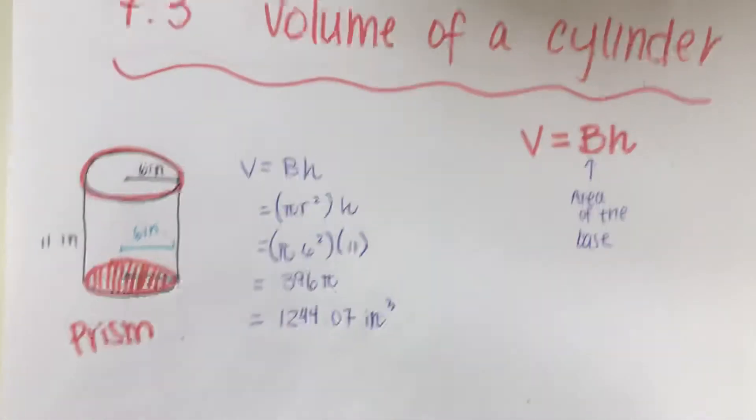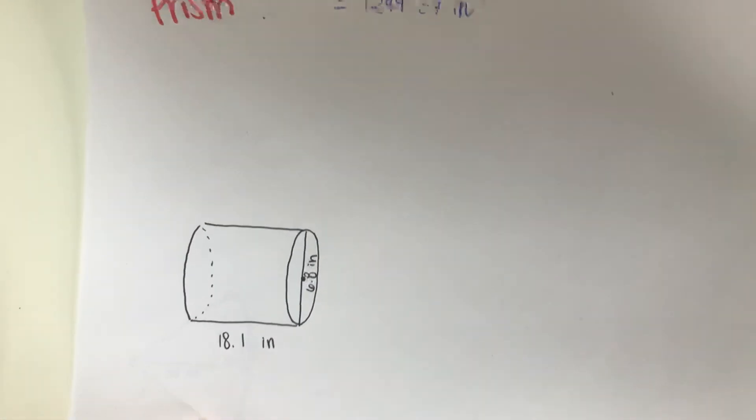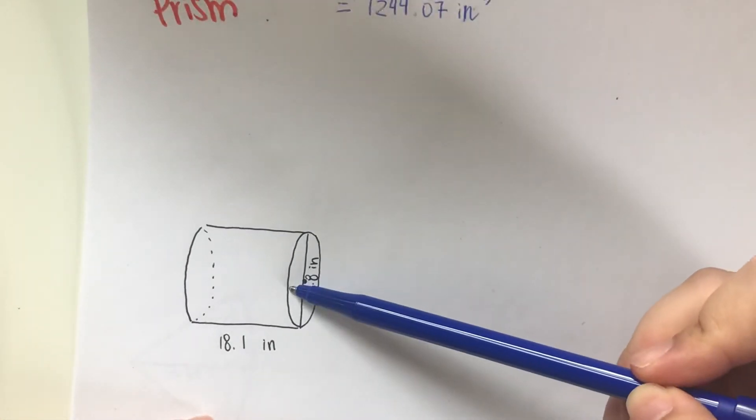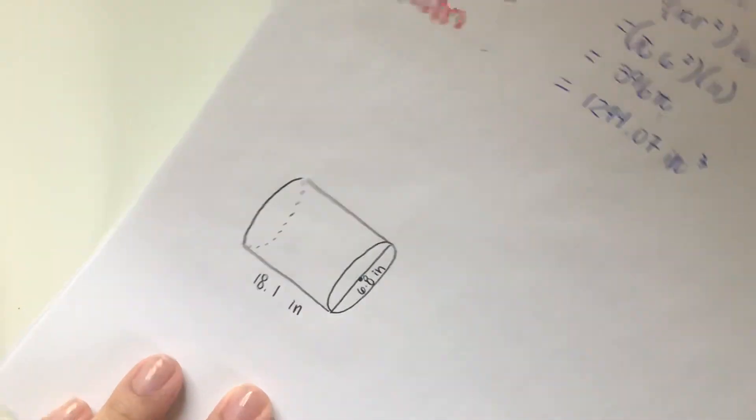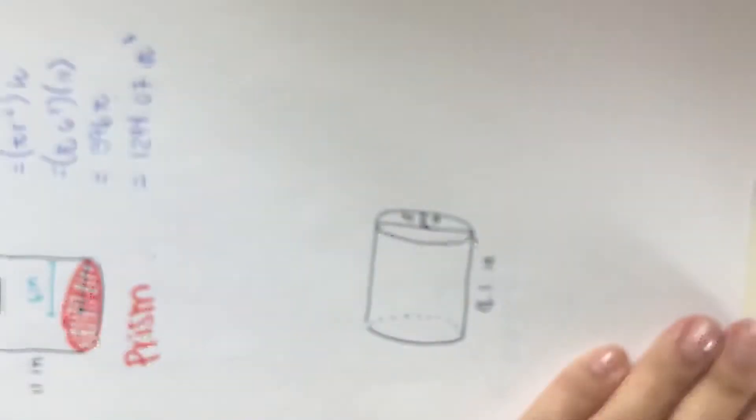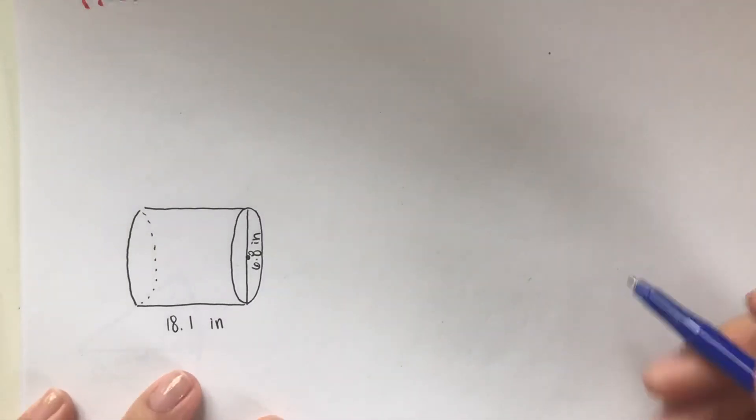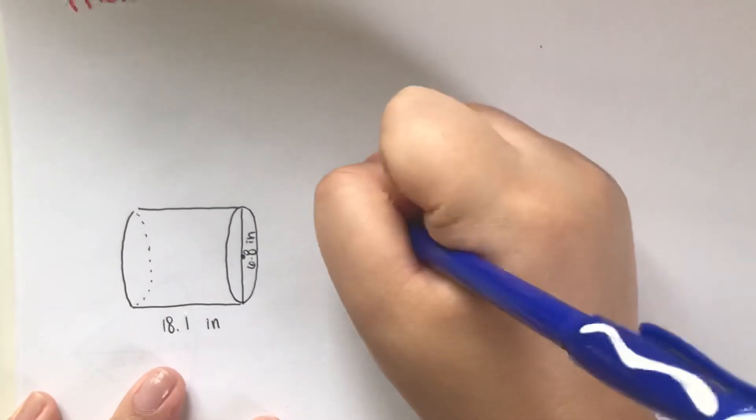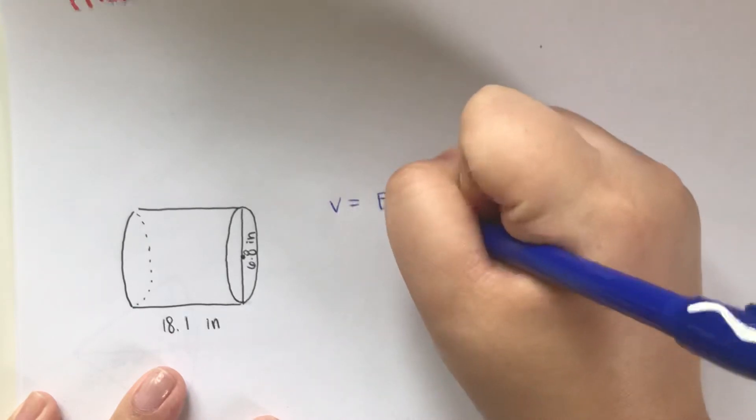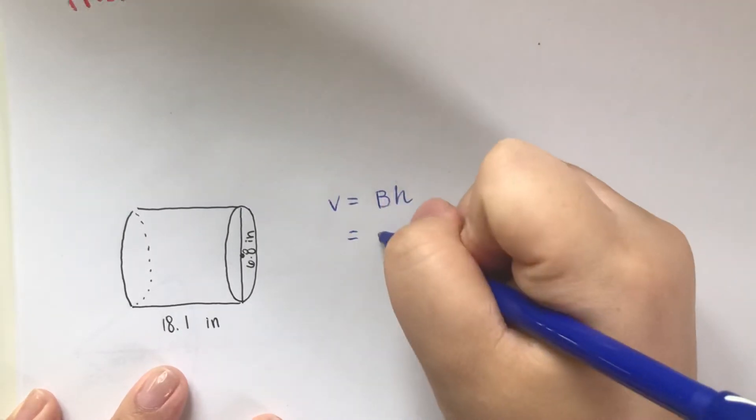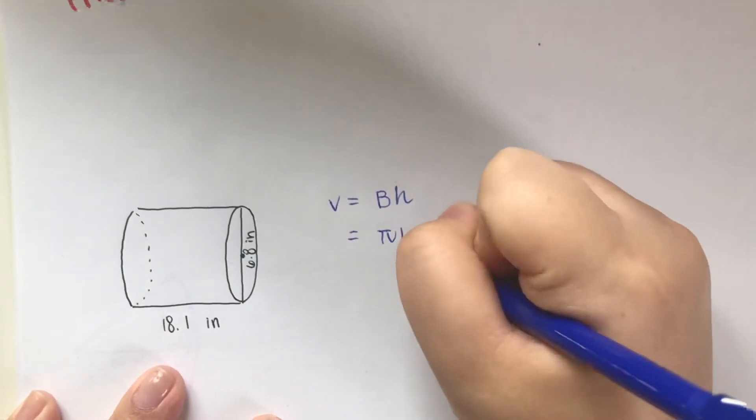So now let's look at the next one. This is also a cylinder but it's kind of rotated. It doesn't really matter—if you want we can rotate it back, whichever way that you like. But everything is still going to be the same.